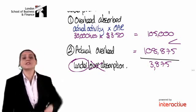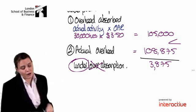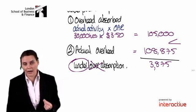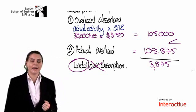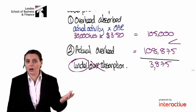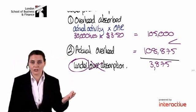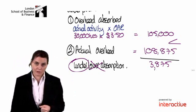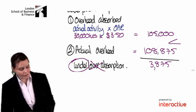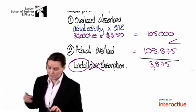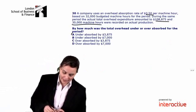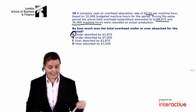If the reverse is true — if our overhead absorbed is greater than our actual overhead — then we have over charged our production account, so we would have over absorbed. In this case, though, we have under absorbed by $3,875, so the correct answer is A.